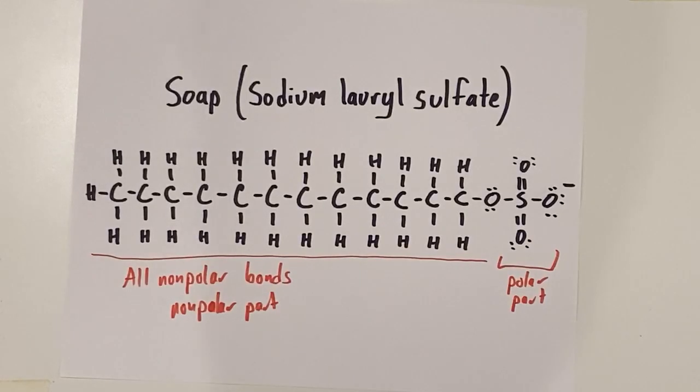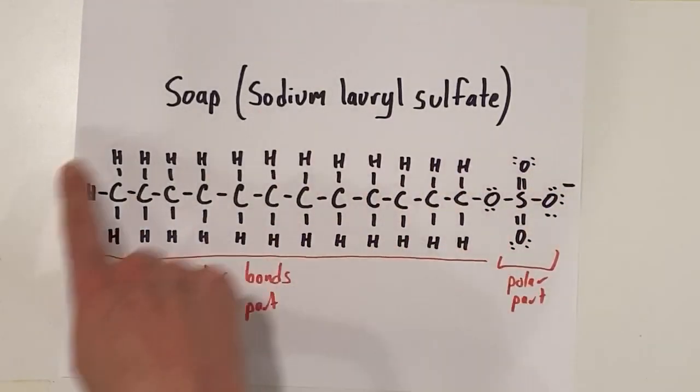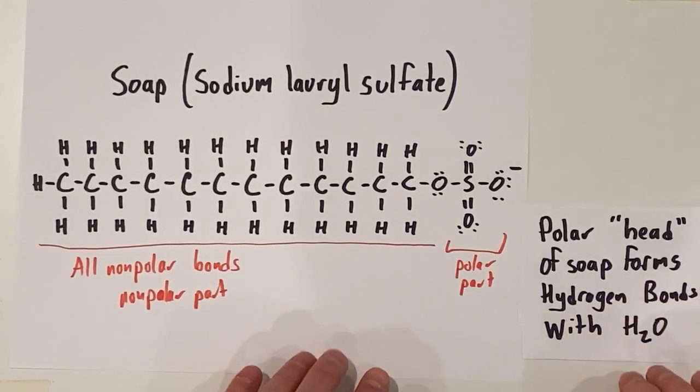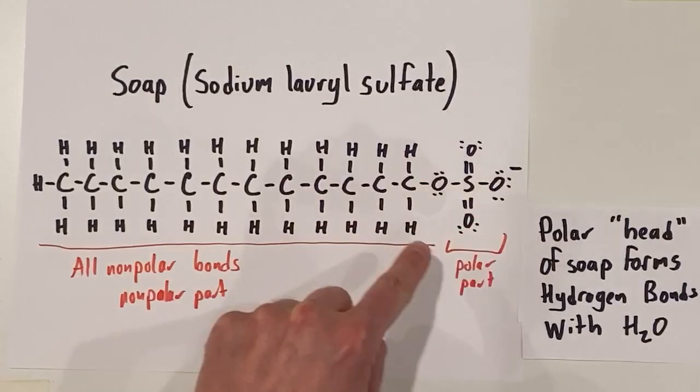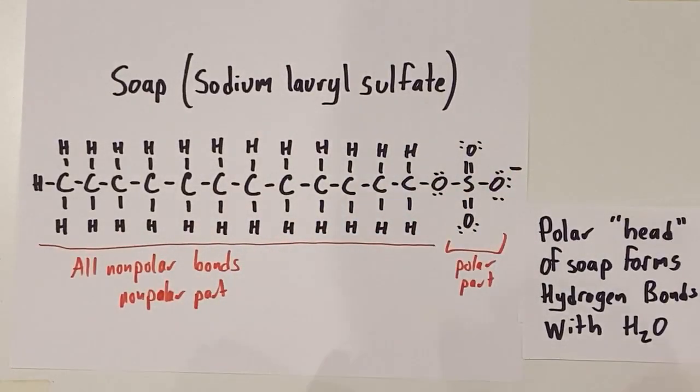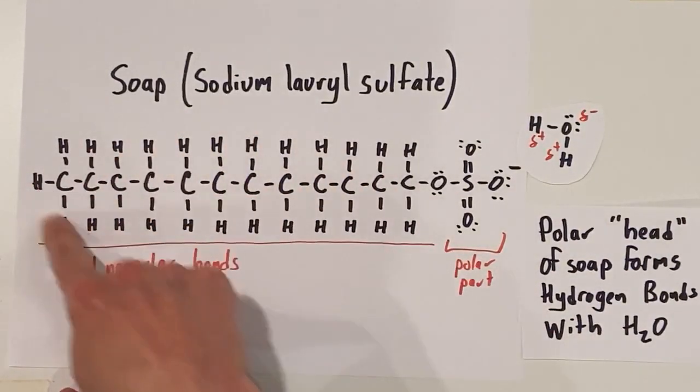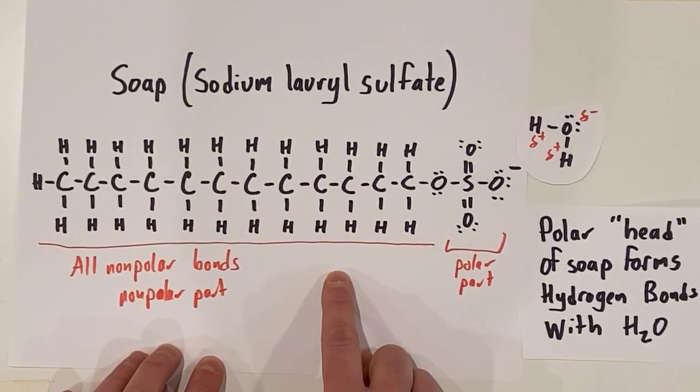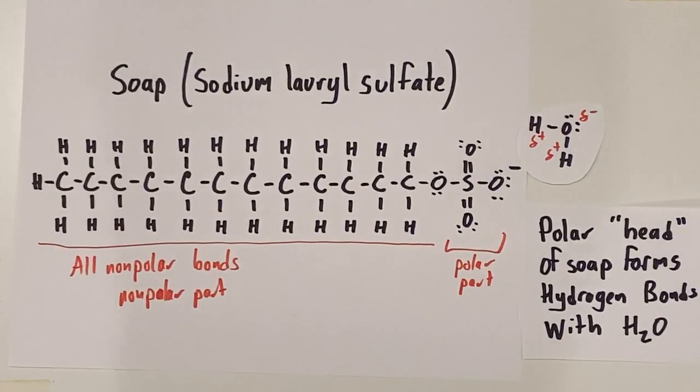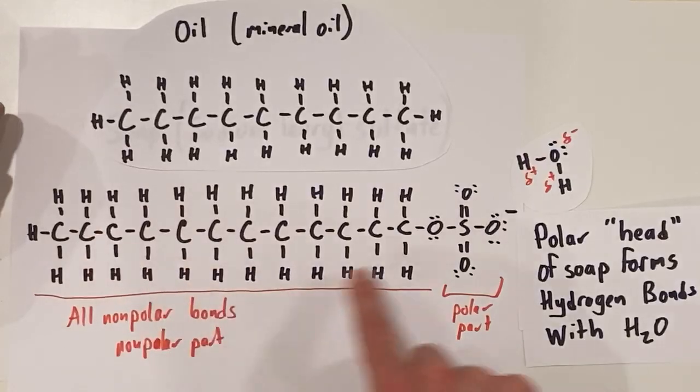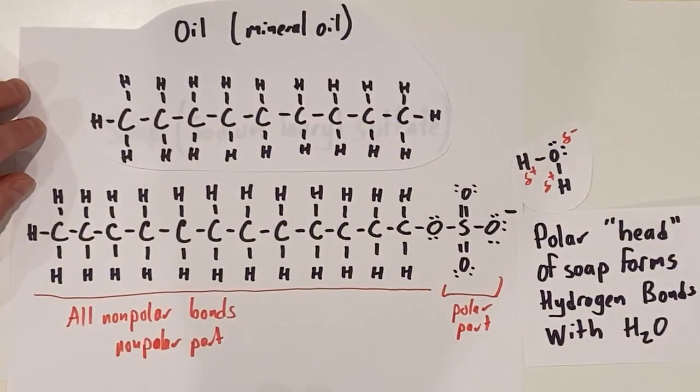So what we have is a polar head and a non-polar tail. The polar head of the soap molecule is able to form hydrogen bonds with H2O. All these negative charged oxygens are able to form hydrogen bonds with water. Water's hydrogens have partial positives. And if we have a large non-polar portion of a molecule, we'll be able to have London dispersion forces. We can get London dispersion forces between this part of the soap and mineral oil. The mineral oil has a very similar structure, and they can both engage in London dispersion force bonding.